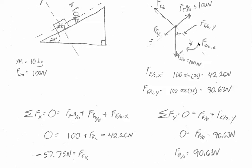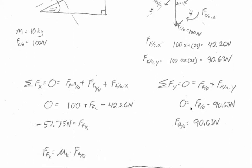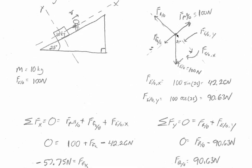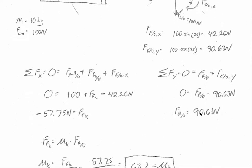So zero equals the force of the ramp on the object minus 90.63 newtons, the negative sign once again because the force of the earth on the object is going down. So we get a normal force of 90.63 newtons and now we have the force of kinetic friction and we have the force of the ramp on the object.